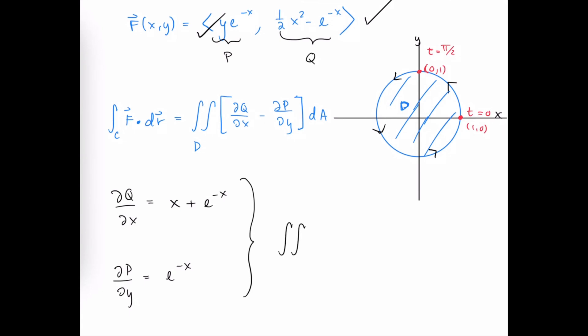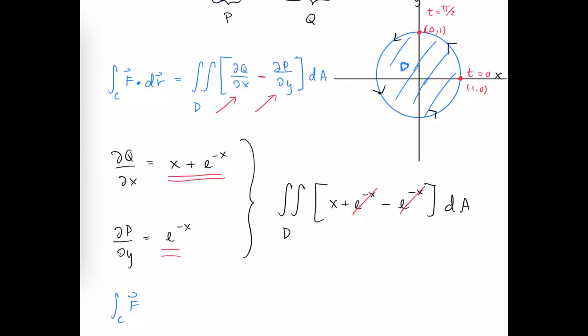So we take these two values and we then build our double integral. We still haven't decided on our limits of integration, so we'll just say over the domain D. Partial Q respect x is x plus e to the negative x minus partial P respect y is e to the negative x. So we just subtract e to the negative x here. We're still just saying dA for now. And we see that the integrand collapses quite nicely to being just x. So our line integral is turning into something pretty manageable, x dA, and it's time to decide on our limits of integration. So we've turned this line integral over a vector field into a double integral of a scalar function, which we've done many times before.